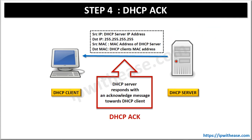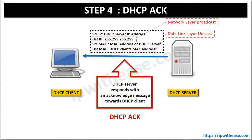Step 4: DHCP Acknowledgement. Once the DHCP client sends the request to get the offered IP address, the DHCP server responds with an Acknowledge message towards the DHCP client. In the packet, the source IP is the DHCP server IP address and the destination IP is all 255s. In the frame, the source MAC is the MAC address of the DHCP server and the destination MAC is the DHCP client's MAC address. The DHCP Acknowledgement is a layer 2 unicast but still a layer 3 broadcast.